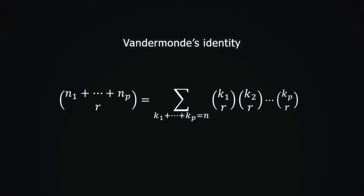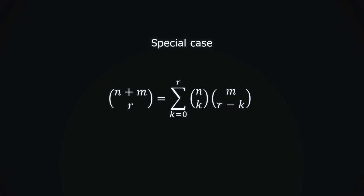For those of you who are truly brave, prove this identity using induction. Let's go back to the case with two groups. Something special happens when m, n and r are all equal. We replace all variables with n except for k which is a counting variable.